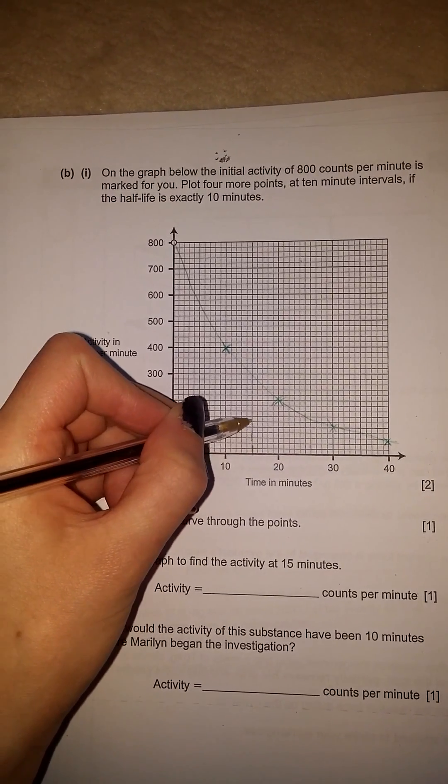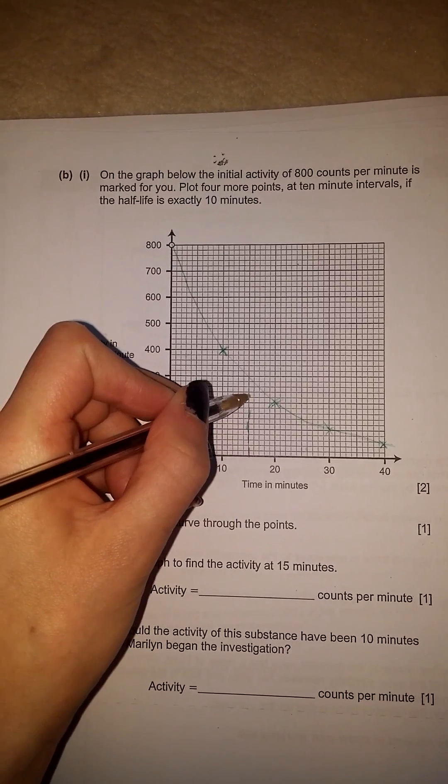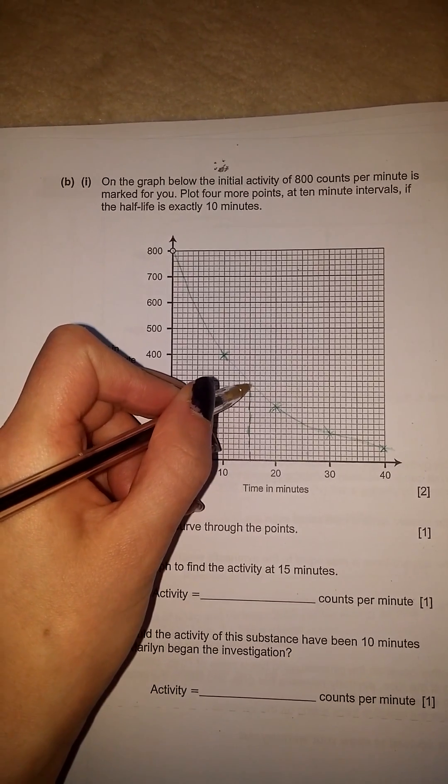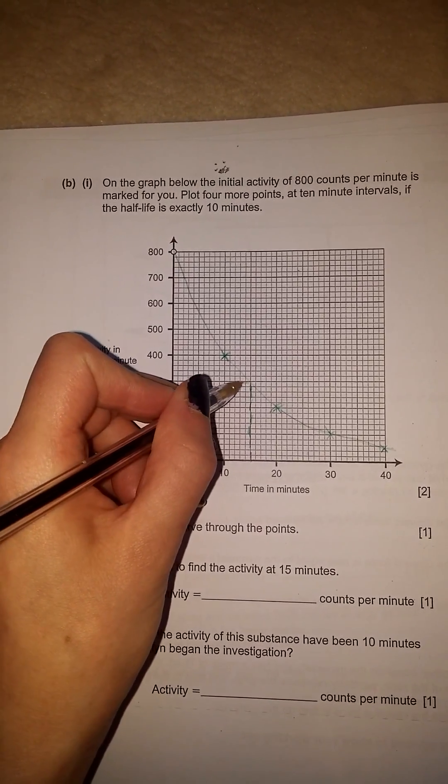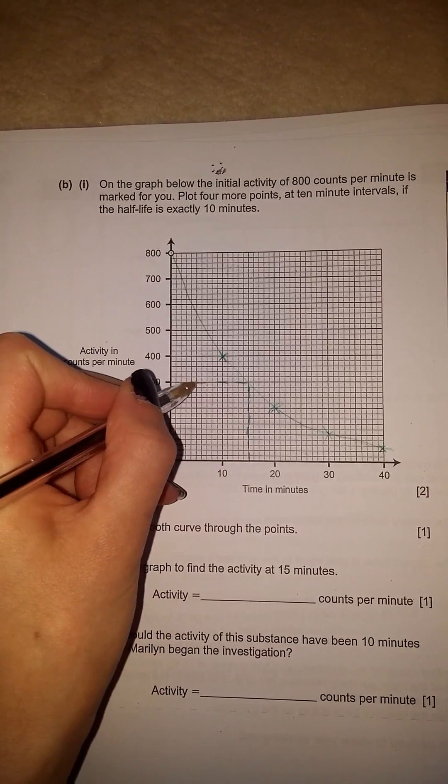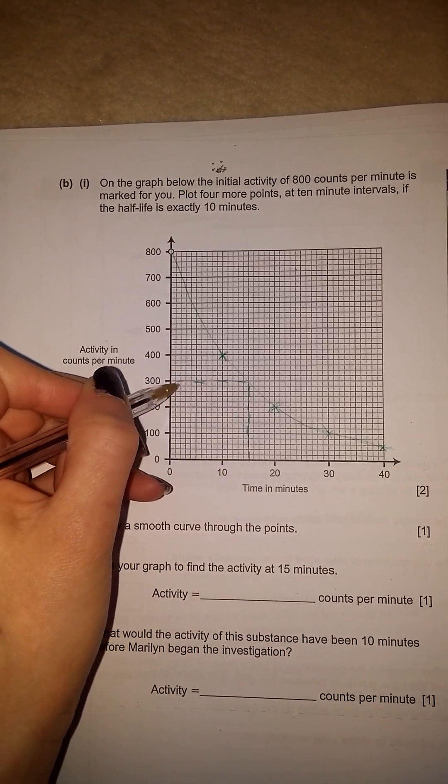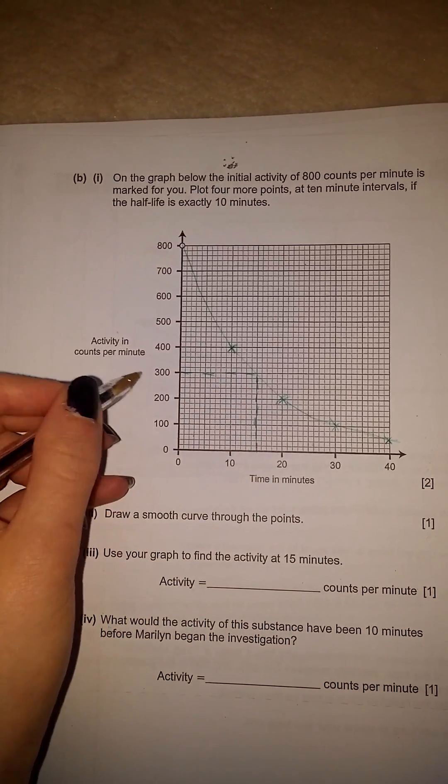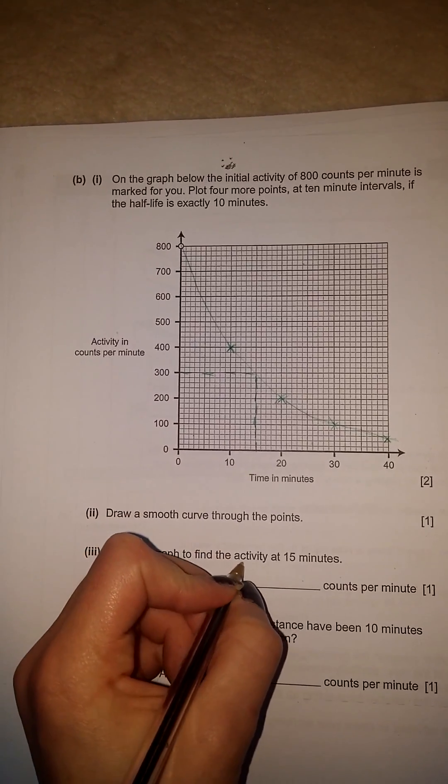So I'm just going to draw a line up to where it hits the line, and then draw a line across. So after 15 minutes, my activity counts per minute is 300.